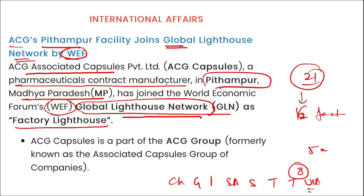The Global Lighthouse Network is an initiative of the World Economic Forum and McKinsey and Company. It is a community of manufacturers showing leadership in applying Fourth Industrial Revolution technologies, transforming factories, value chains, business models, and operational gains. ECG's Pithampur facility in Madhya Pradesh has recently joined it.